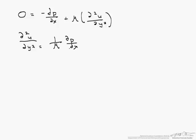So in order to solve for u, or for our velocity, we have to integrate this twice. Our first integration gives du/dy equals 1 over mu dp/dx times y plus our constant 1.